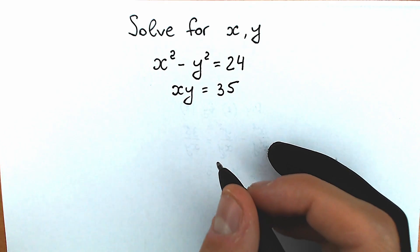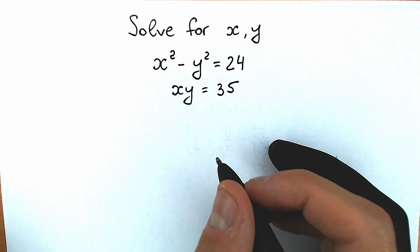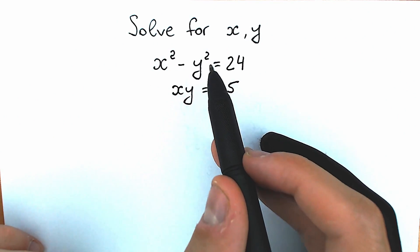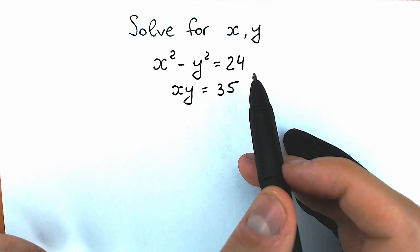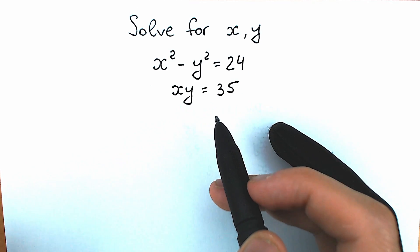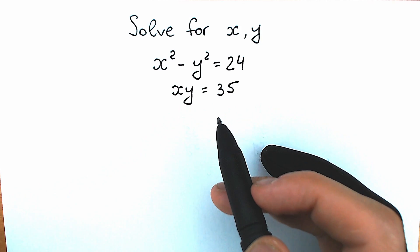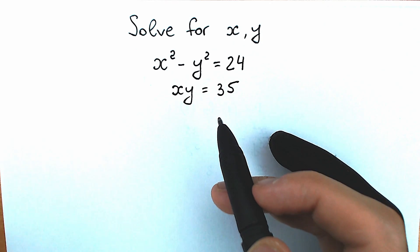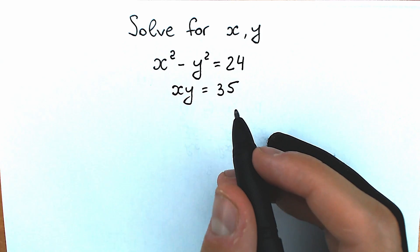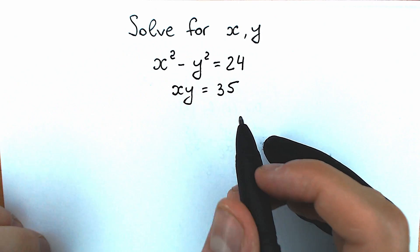Hello everyone, happy to see you here on my channel Hiya Mathematics. Today we have a really interesting question: x squared minus y squared equals 24, and a product x times y equals 35. If you have your own solution, you can write it down in the comment section and we will check your answers here in just 5 minutes.